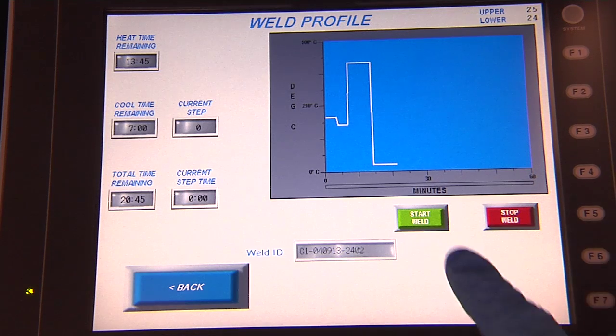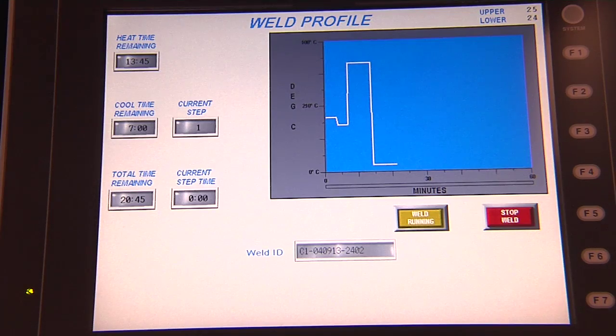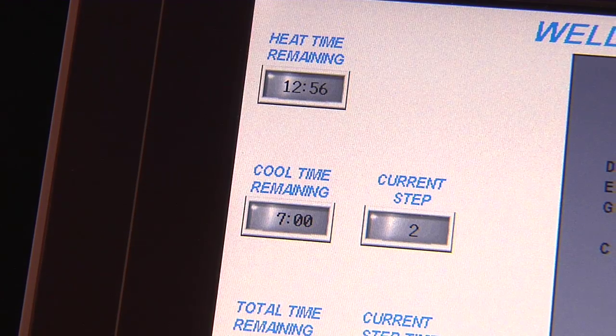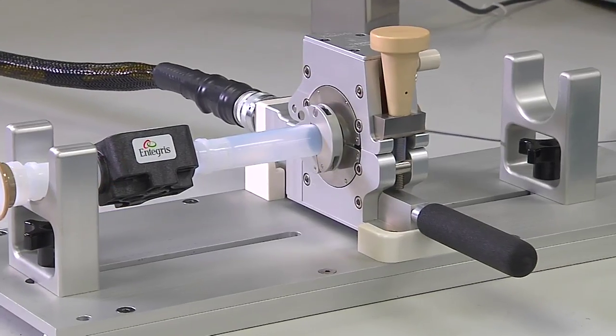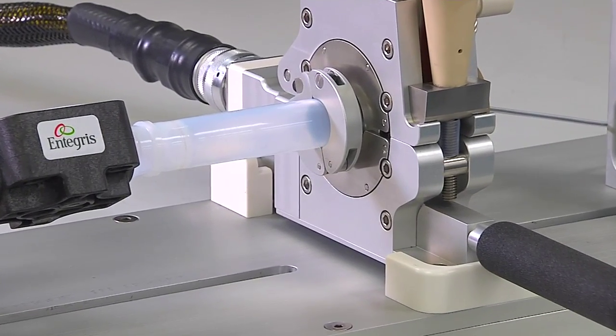When the profile has loaded, touch the Start Weld button. The controller and weld head will now carry out the heating and cooling of the weld zone. Throughout the welding procedure, the proprietary software monitors the weld process parameters to ensure a repeatable, consistent, and controlled weld based on factory settings.